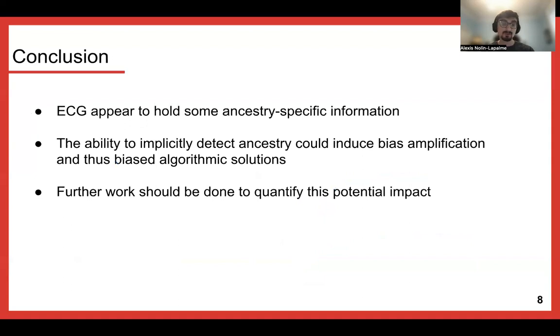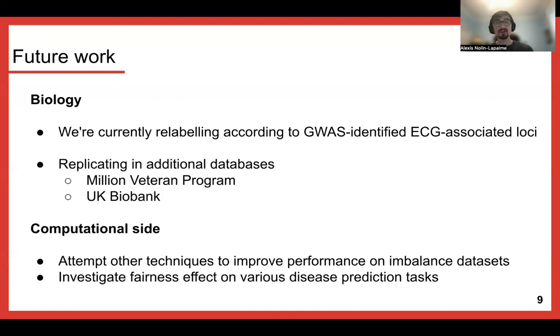So in conclusion, ancestry-specific information can be leveraged by convolutional networks implicitly using ECGs, and bias should be investigated when making ECG-based predictors. And for future work to quantify this potential impact, we're currently trying to relabel using GWAS-identified loci, so loci of genes that do affect ECGs, also validated on more healthy ECGs from the Million Veteran Program in the US and the UK Biobank, which contains at least 70,000 patients with ECGs.